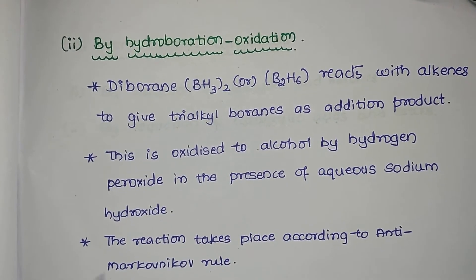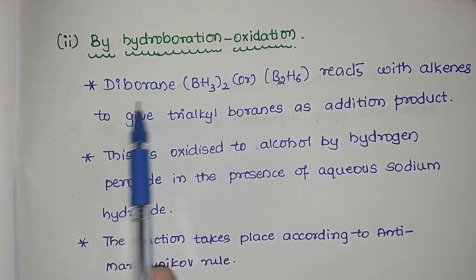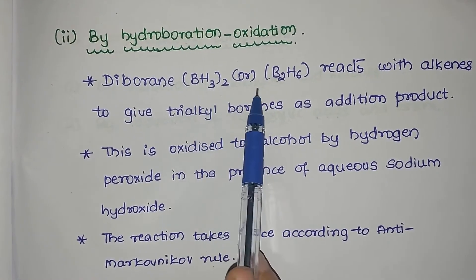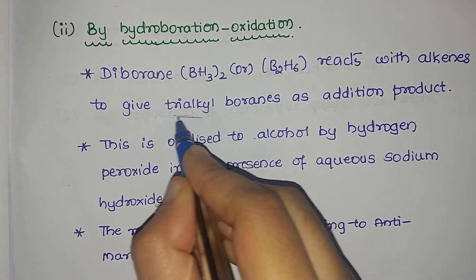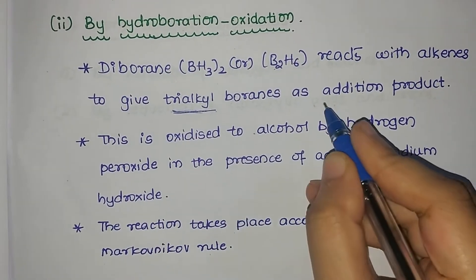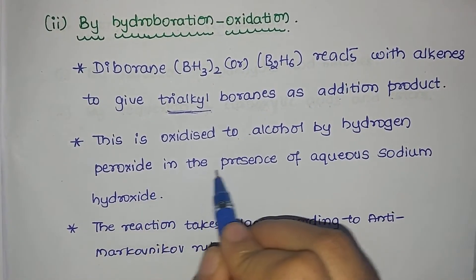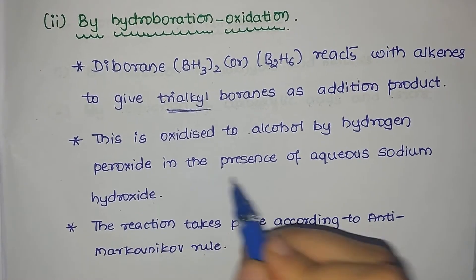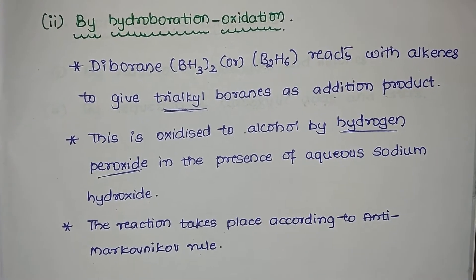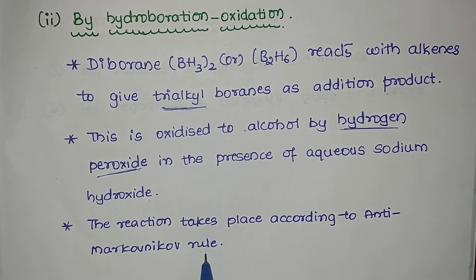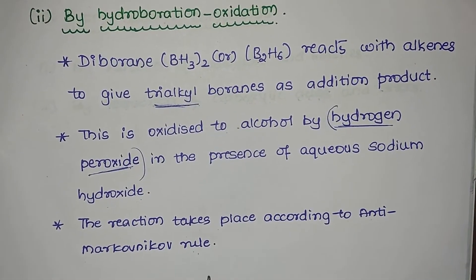Hello students. We move on to the next method of preparation, that is by hydroboration oxidation. Here we see that diborane BH3 twice, or B2H6, reacts with an alkyne to give trialkyl boranes. Trialkyl refers to three alkyl groups. The trialkyl boranes obtained as addition product are oxidized to alcohol by hydrogen peroxide in the presence of aqueous sodium hydroxide. Whenever we make use of hydrogen peroxide, it follows anti-Markovnikov rule.